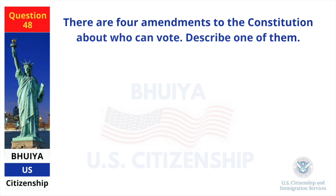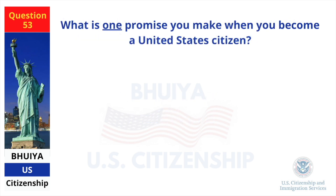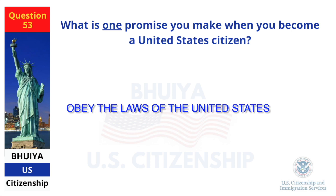There are four amendments to the Constitution about who can vote. Describe one of them. Citizens 18 and older can vote. What is one promise you make when you become a United States citizen? Obey the laws of the United States.